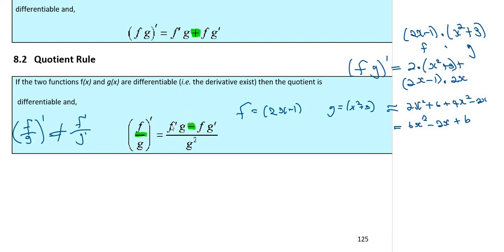So the quotient rule works as follows: take the derivative of the top function times the bottom as it is, then minus — not plus like in the product rule — the top as it is times the derivative of the bottom, all over g squared, the bottom one squared.